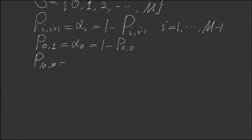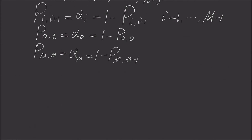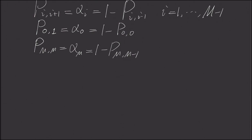At the right-end boundary, we have αₘ chance to stay there, and 1 minus αₘ to be reflected back into the intermediate states. If all of these α values are not 0, it's easy to verify that this chain is ergodic and not periodic.